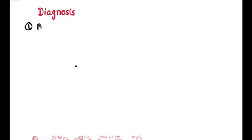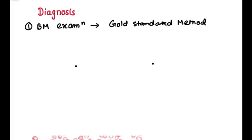The first is bone marrow examination. First of all, please note this point: it is a gold standard method. So what we will see in bone marrow examination? We will see micronormoblast present.